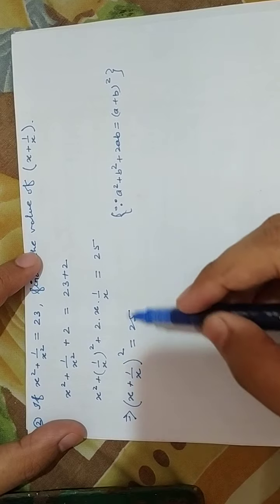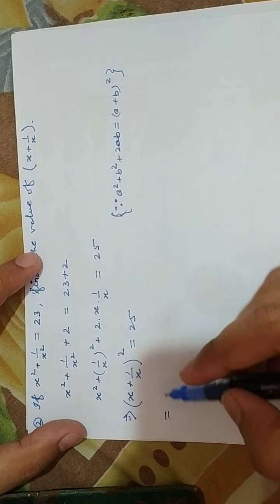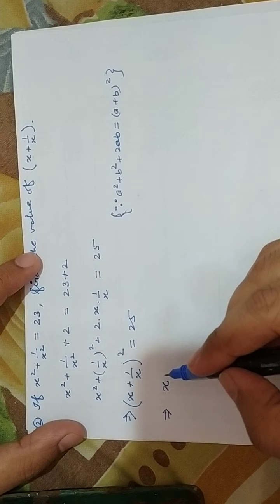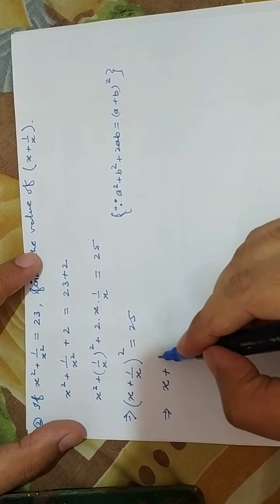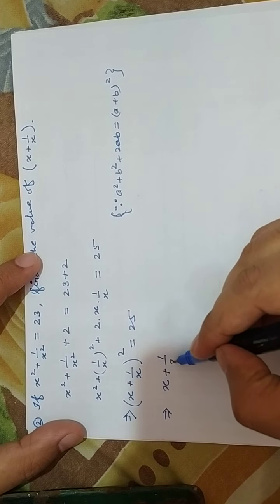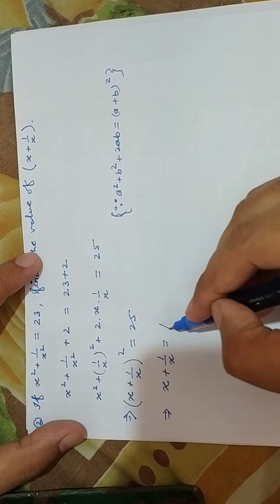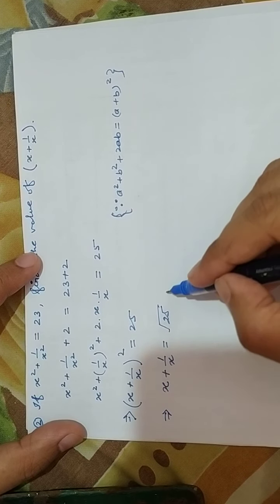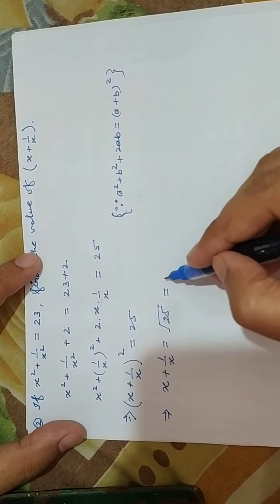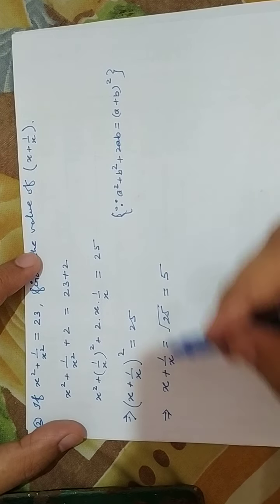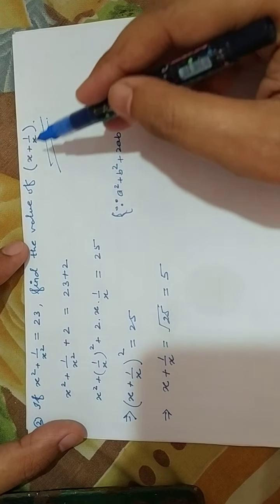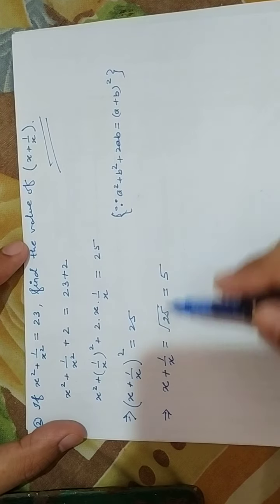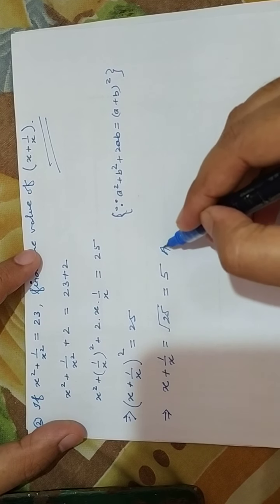Transposing the square to the right side, x + 1/x equals the square root of 25, which equals 5. So the value we had to find — what is x + 1/x — is equal to 5.